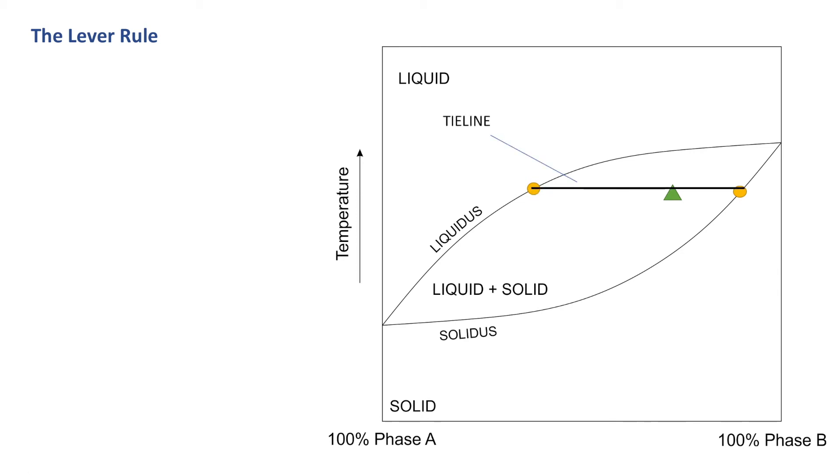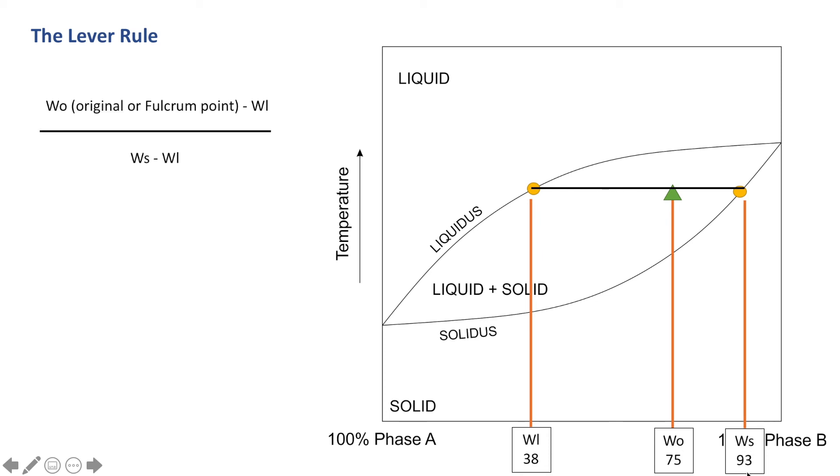If we draw a tie line between the liquids and the solids, we can work out the percentage component of liquids and solids in our system using the lever principle. The overall composition of the system will be our fulcrum point. Next, we draw our lines down to see where they intersect on the x-axis. The weight of our liquid here is 38, the weight of the original is 75, and the weight of the solid is 93. Using our original solid percentage equation from the previous slide, we've got 67% of our solid phase, and then we can do 100 minus 67 to show that our phase is essentially 33% liquid.